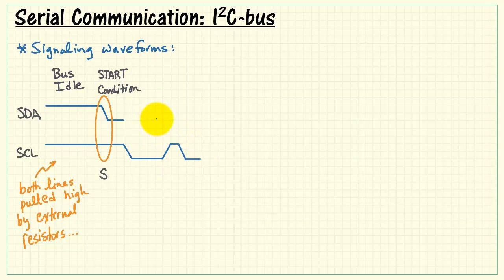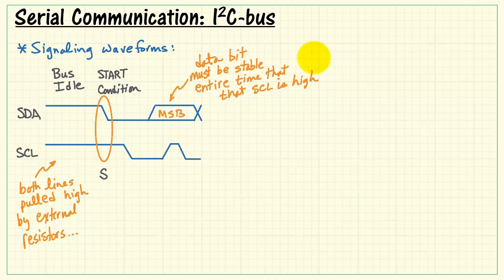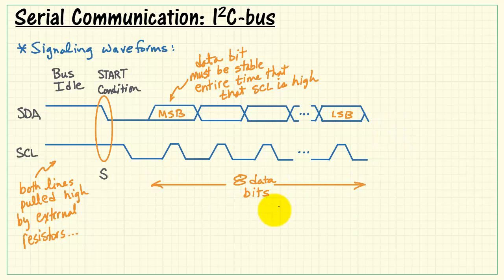The start condition designated with an S occurs when SDA drops low while SCL is high. After the start condition, the master begins transmitting the data byte. It does so by transmitting the most significant bit first, and you have a single serial clock pulse per bit. It's important to note that the data bit must be stable the entire time that SCL is high. Here's the remaining seven bits going all the way down to the least significant bit.